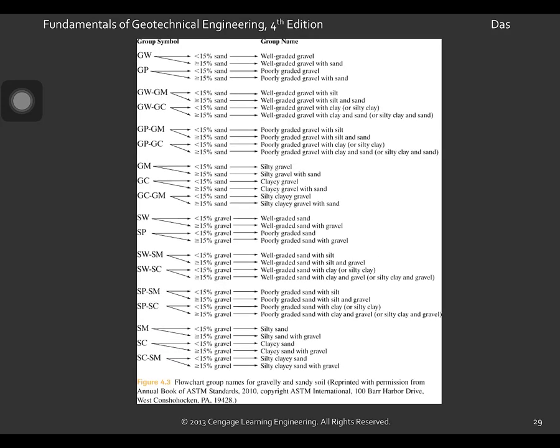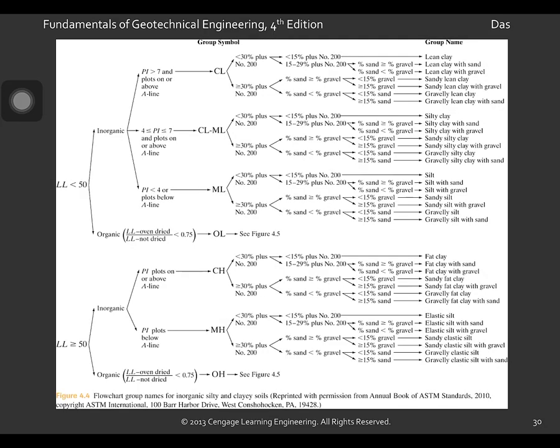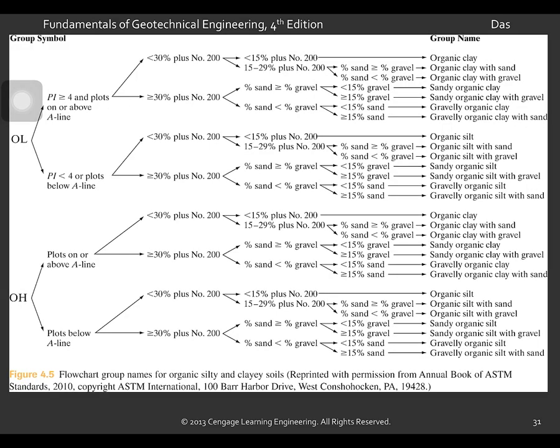And this is the flow chart for group names for gravels and sandy soil. And this is the flow chart for group names for inorganic, silty and clayey soils. And also, flow chart for organic silty clays and clayey soils.